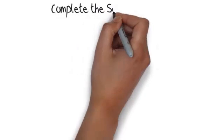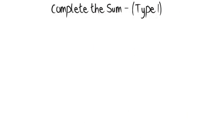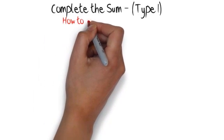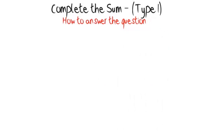Complete the sum — type I. In these types of questions you'll be given a sum that you need to answer. One side of the sum will have a number missing. When you finish the sum, both sides should equal the same number.